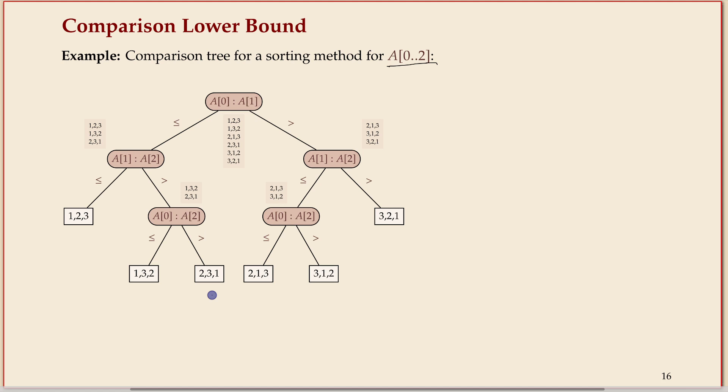So this is how in the comparison model algorithms look like. They're comparison trees where the nodes tell you these are the two positions in the original array I want to compare, those are the two outcomes, and depending on that the next thing happens. The important bit is that every algorithm in the comparison model can be formulated as such a tree. So we have a way to reason about all possible algorithms by studying all possible trees, and trees are much easier to handle than general algorithms with whatever complicated code.